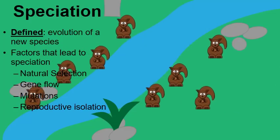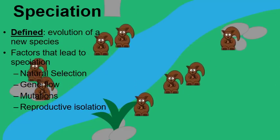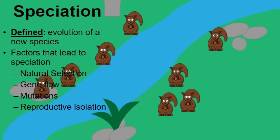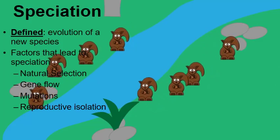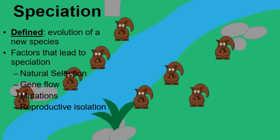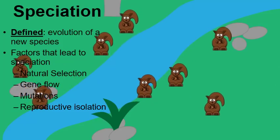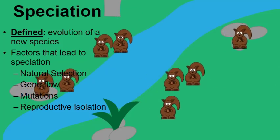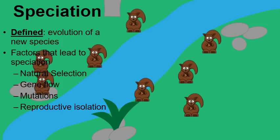Another big factor in speciation is reproductive isolation. Notice how these two populations of squirrels are isolated from one another by the river. This is going to be a key factor in the process of speciation, and we'll go into this in more detail in a little bit.